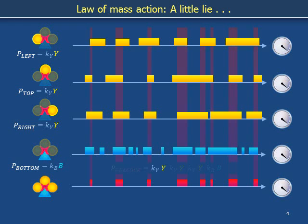The left groove is occupied for a fraction of time k sub y times concentration y. Within this fraction of time, the top groove is also occupied for a fraction of the time. Thus, the fraction of the time that both left and top grooves are occupied is k sub y times concentration y, times k sub y times concentration y. If the left groove is occupied half of the time, and the top groove is occupied half of the time — even being occupied half of those particular times when the left groove is occupied — then the top and left grooves are simultaneously occupied one quarter of the time.